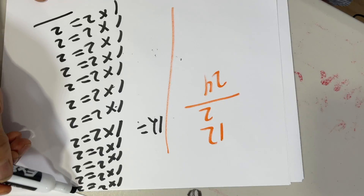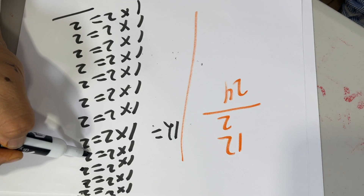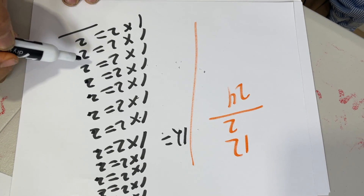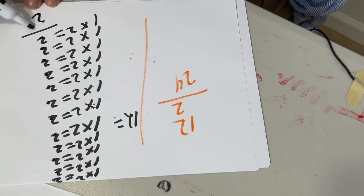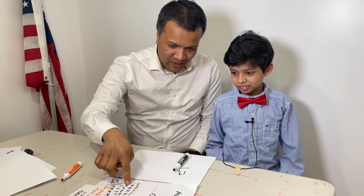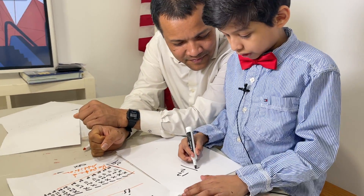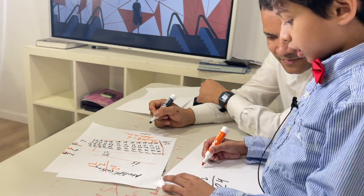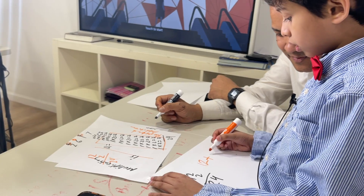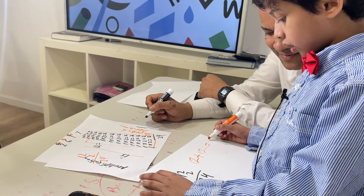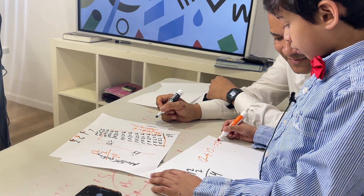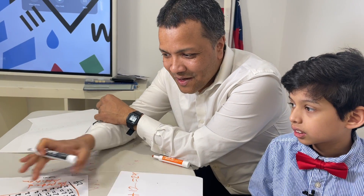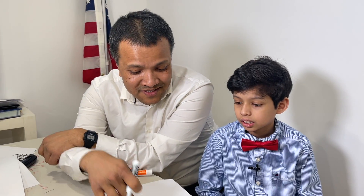1 times 2 is 2, plus 2 is 4, plus 2 is 6, 8, 10, 12, 14, 16, 18, 20, 22, 24. So multiplication is a repeated addition — you could just add: 12 plus 12 equals 24. That demonstrates that multiplication is repeated addition.